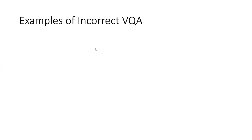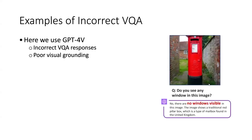Here are some examples of the bottleneck. The first example is based on GPT-4V. We feed an image to the model and ask: did you see any windows in this image? The model gave a negative answer — no windows visible. However, if you look carefully, you can see there's a window behind the mailbox. From this example, we can tell that multimodal LLMs have poor vision grounding abilities and will give incorrect VQA responses.